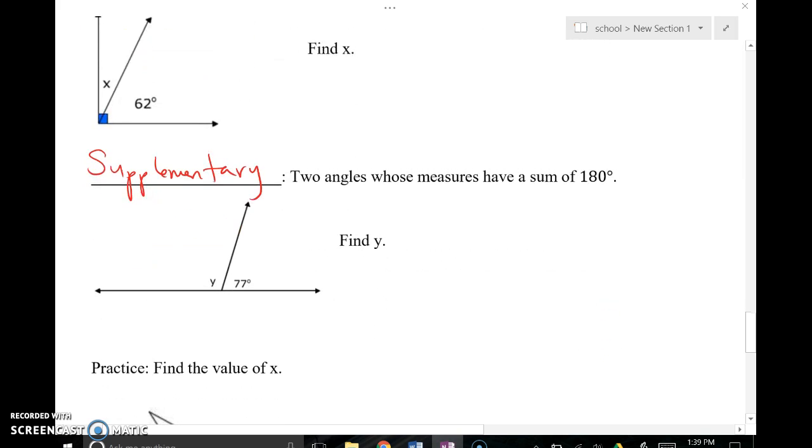Then we have this concept of supplementary. If two angles measurements add together to give you 180 degrees, we say that those two angles are supplementary. Here you've got angle Y and 77 degrees. They form a linear pair. These two angles make that straight line, which is 180 degrees. So these two angles, if you add them together, you get 180 degrees. That's a supplementary relationship. Again, supplementary angles do not have to be adjacent. They just have to have measurements that add up to 180 degrees.